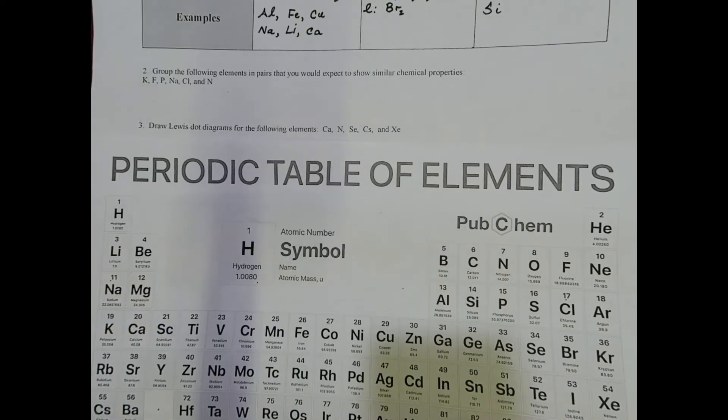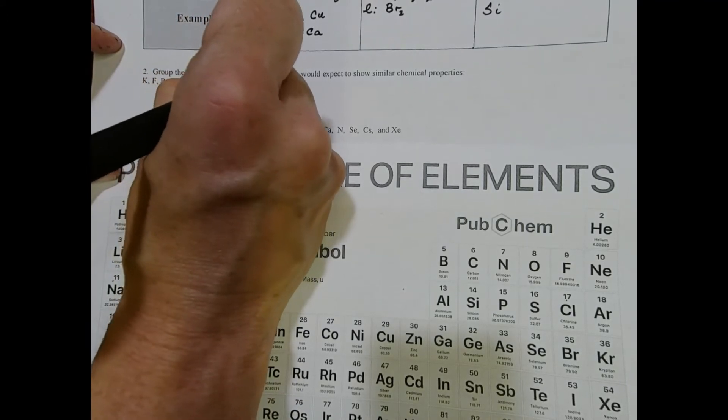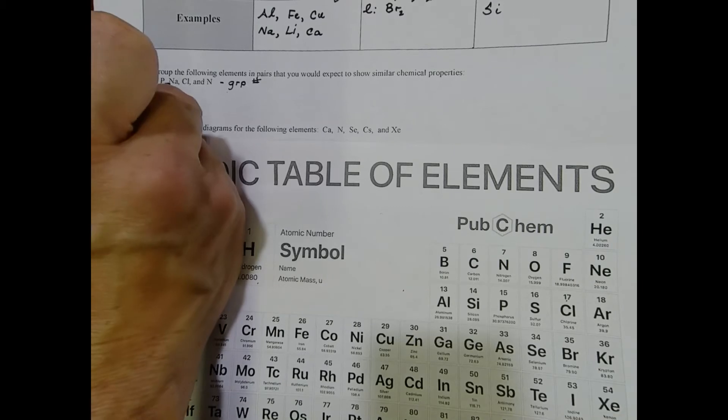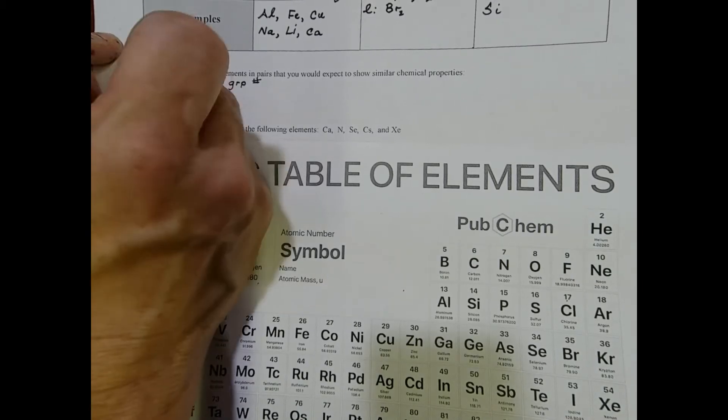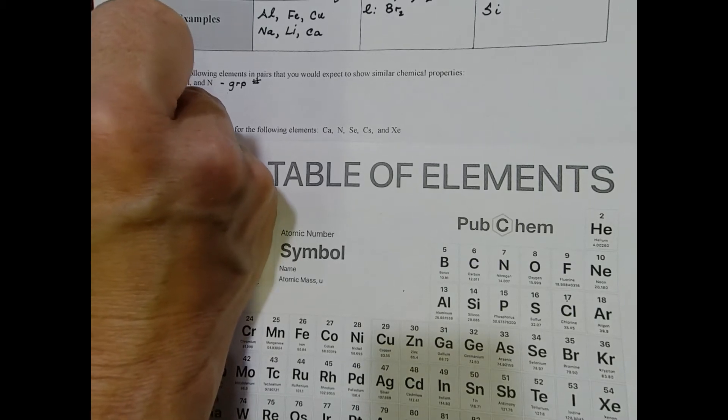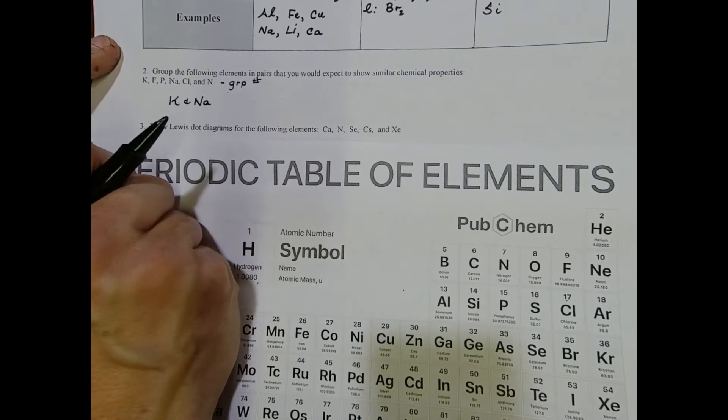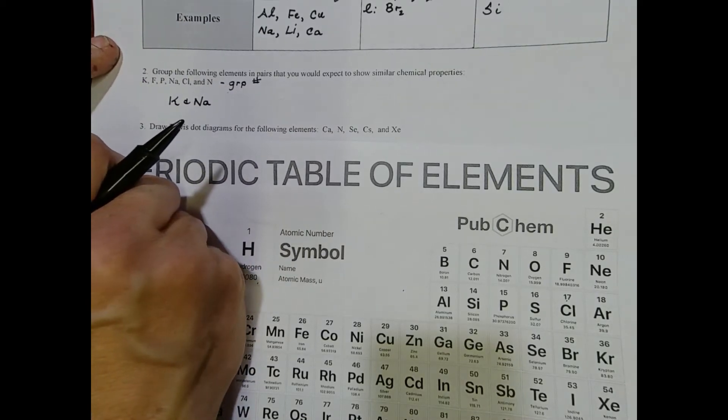On question two, we're asked to arrange the elements in pairs based off of which elements we expect to see similar chemical properties. I'm going to do this based off of the group number. For instance, since potassium and sodium are both in group one and they're both alkali metals, I expect them to both be super reactive and flammable if I throw them into some water.